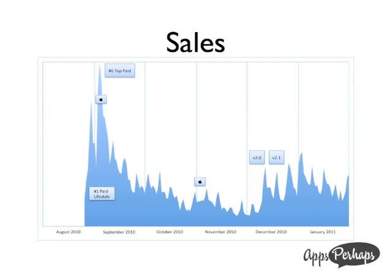Along the way we got featured by Apple twice — once for New and Noteworthy, and once for What's Hot. They ran for about three to four weeks, which is good exposure but it's all up to Apple. We released our updates around here — about four weeks apart — and for those we actually see some spikes. All these spikes are on weekends, which is quite interesting. Our trend shows we're getting more downloads with each new release.